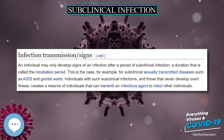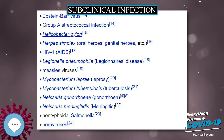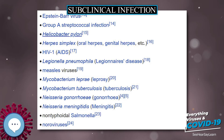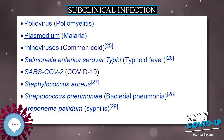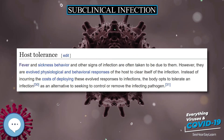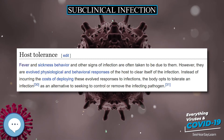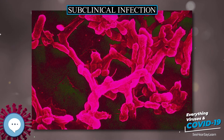Individuals with such subclinical infections, and those that never develop overt illness, create a reserve of individuals that can transmit an infectious agent to infect other individuals. Because such cases of infection do not come to clinical attention, health statistics can often fail to measure the true prevalence of an infection in a population, and this prevents the accurate modeling of its infectious transmission.